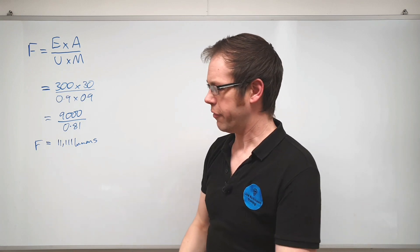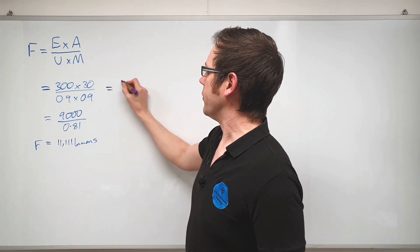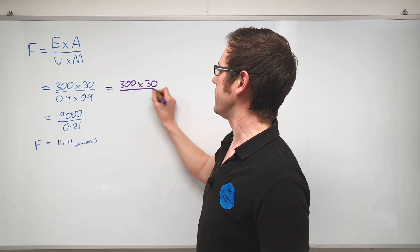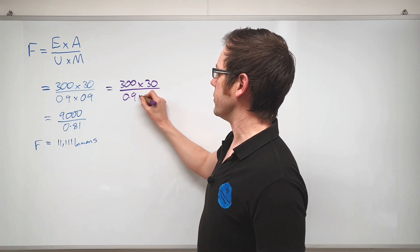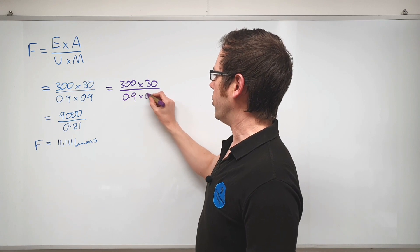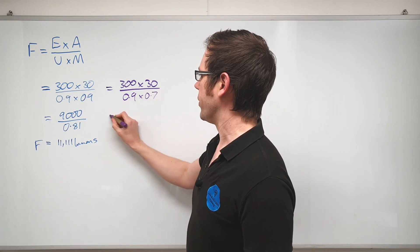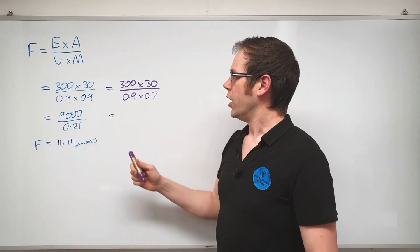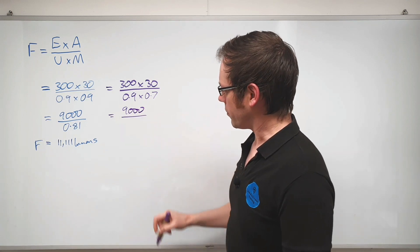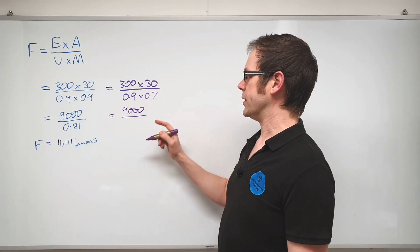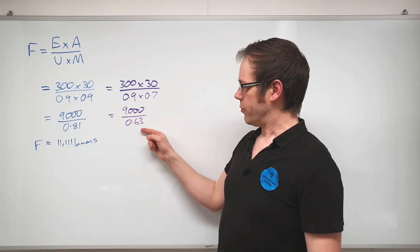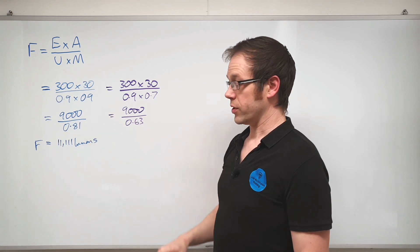So let's say we'll take the calculation from here now. Let's say we're keeping the room the same, 300 lux required times that by 30 square meters, divide that by 0.9 for the utilization, but let's reduce this number now. Let's turn that into something like 0.7 or something like that. What we're going to end up with then? Well again we've got the same number on the top, 9,000—that calculation hasn't changed. And then we've got 0.9 times by 0.7 which is going to give us 0.63.